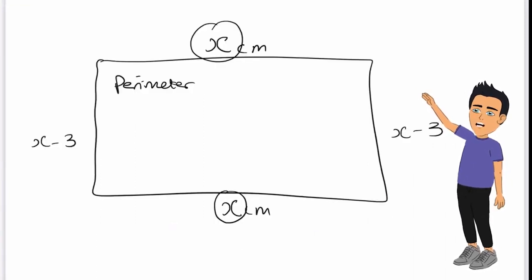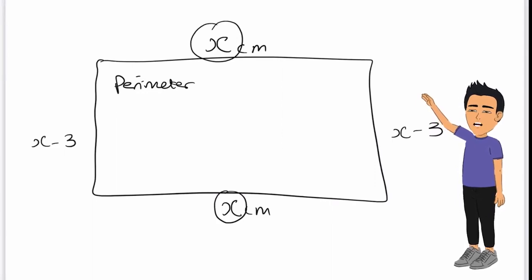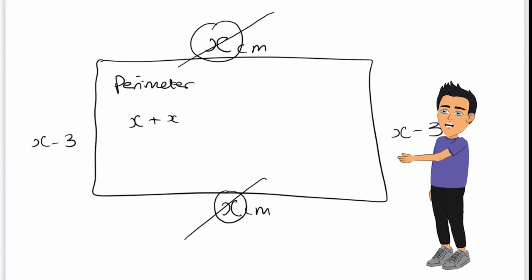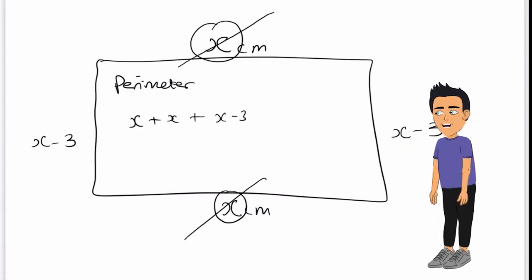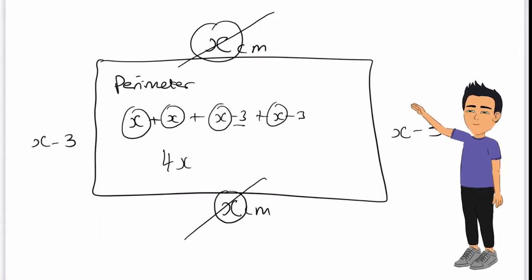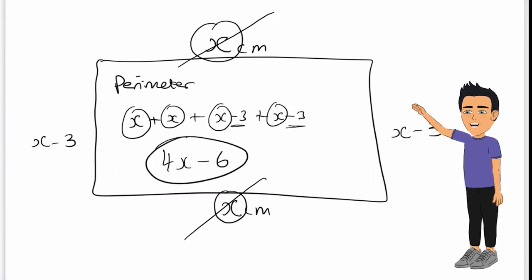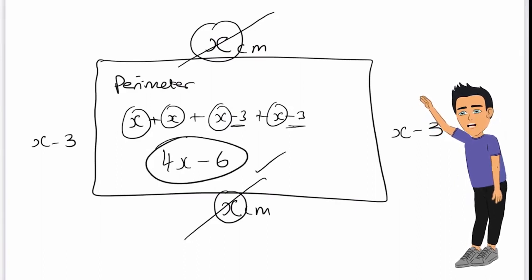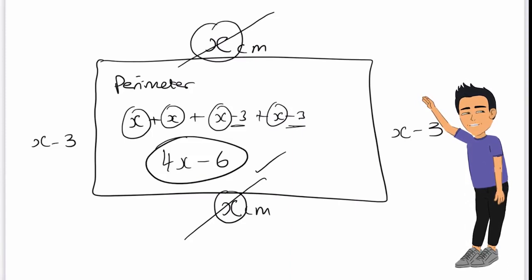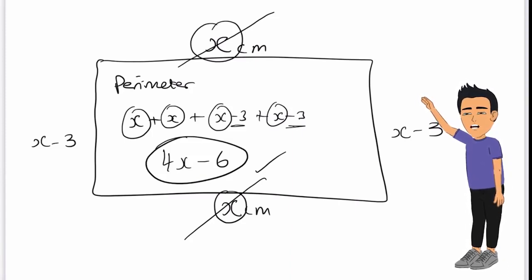Let's label all our sides and add up all of the sides to calculate the perimeter. We have our top and bottom, so x plus x. Then x minus 3 from the left and x minus 3 from the right. We've got 1x, 2x, 3x and 4x. Minus 3 and minus 3 gives us minus 6. The perimeter is 4x minus 6. Let's now start our counter for 10 minutes and begin.